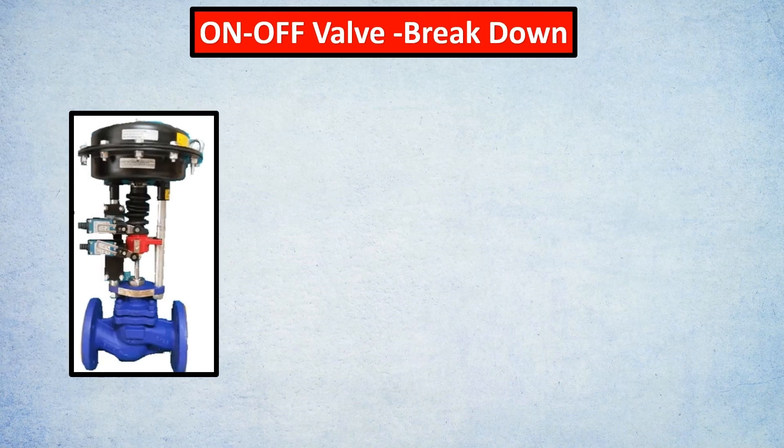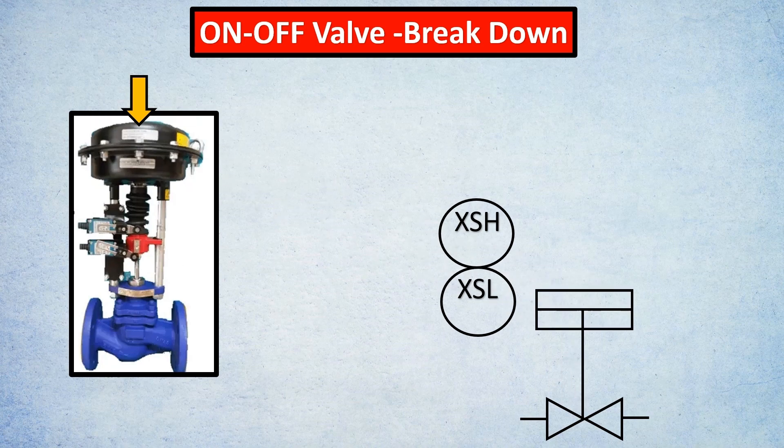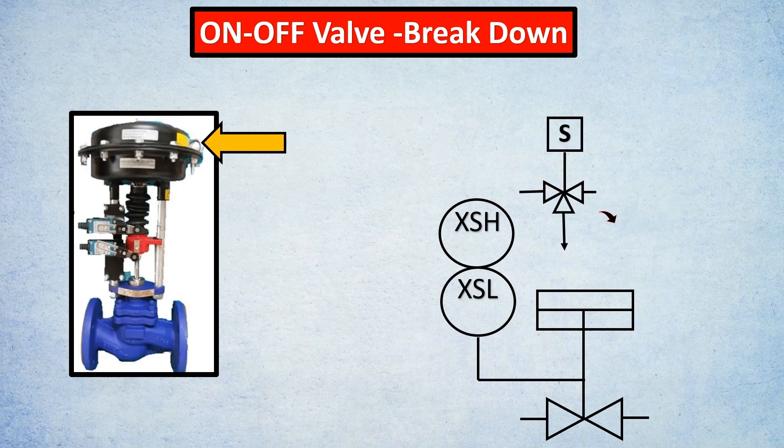Here's an on-off valve breakdown. Let's start with the body. The body is a generic valve symbol. Then you have two limit switches and the actuator. This entire assembly is connected together.